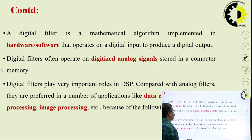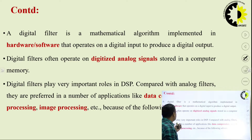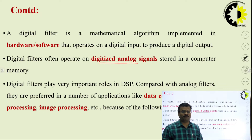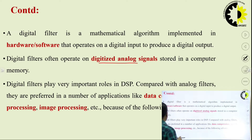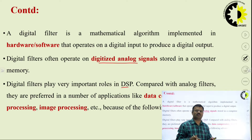A digital filter is a mathematical algorithm implemented in hardware or software that operates on digital input to produce digital output. You use both hardware and software. You can operate on digitized analog signals that are stored in a computer. Digital filters play an important role in DSP. Compared with analog filters, digital filters are preferred because they can perform applications such as data compression, speech processing, and image processing.